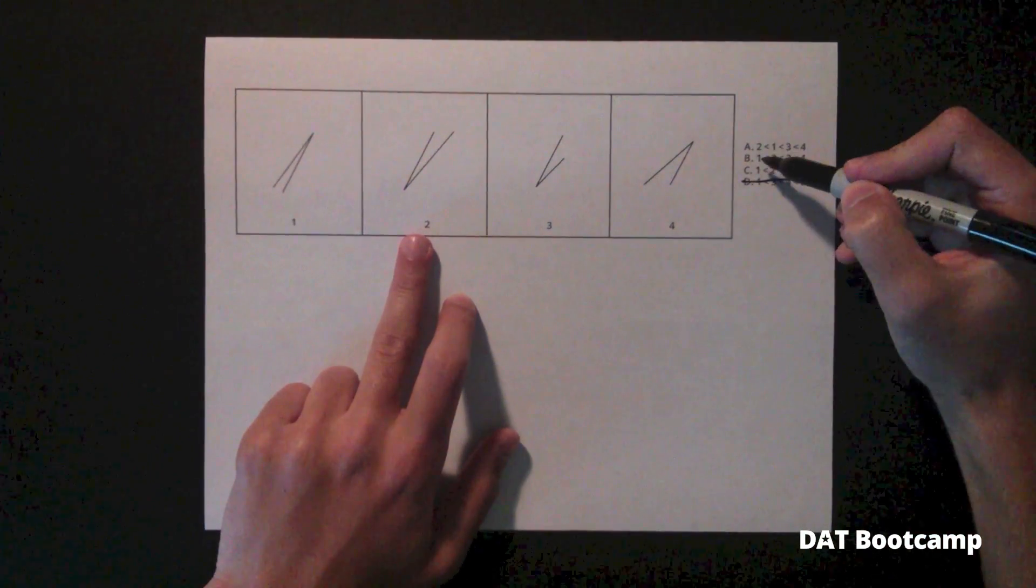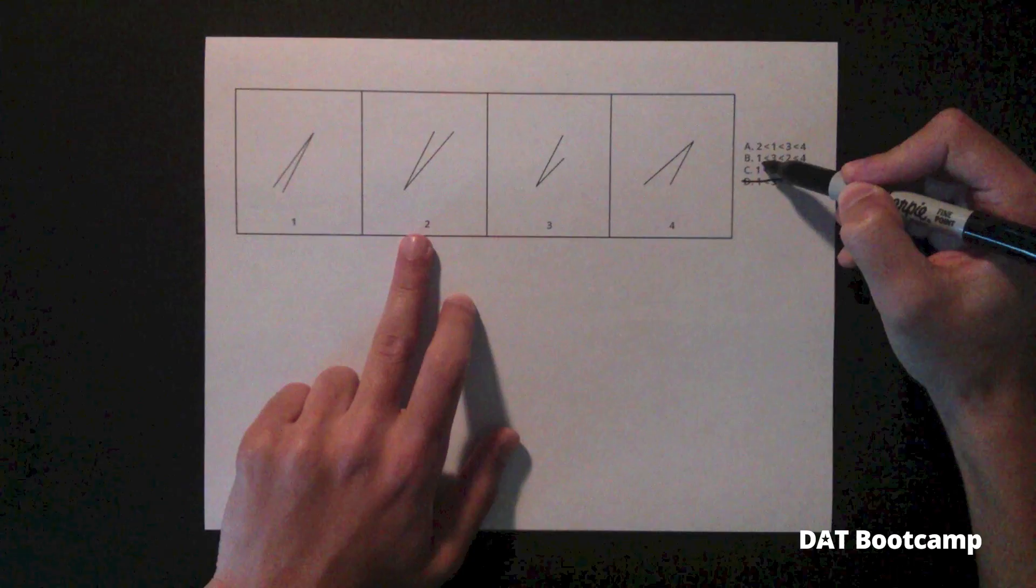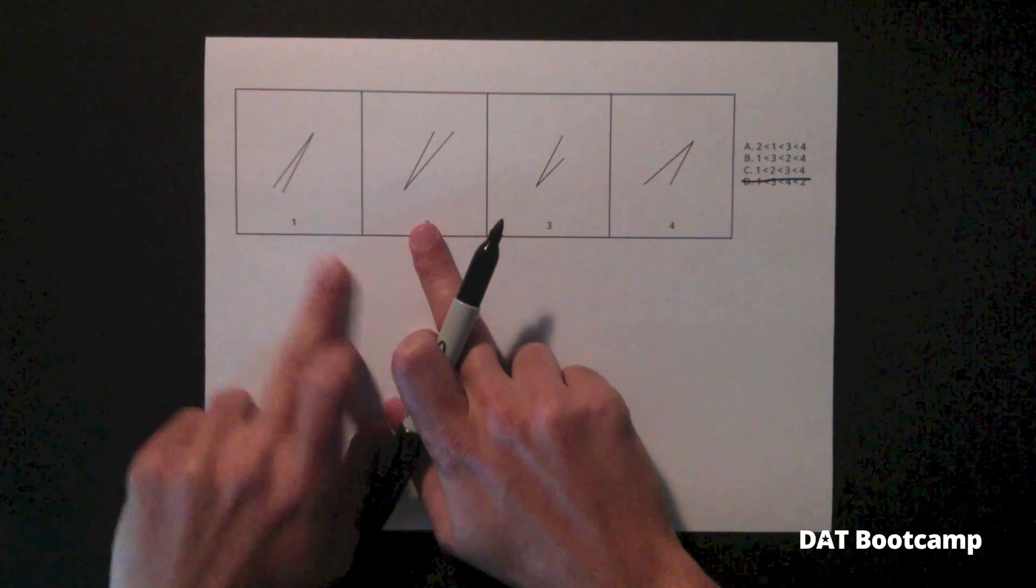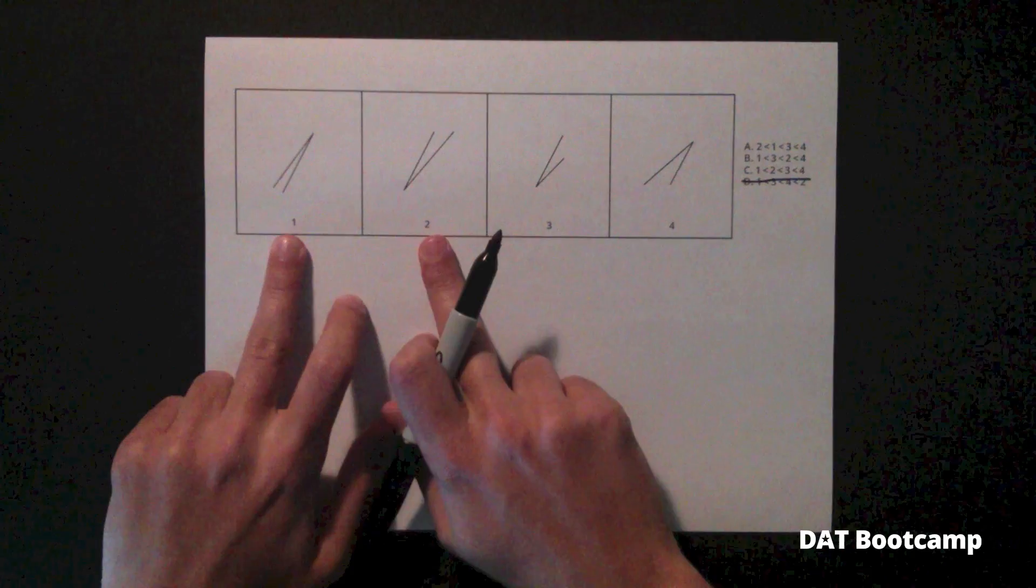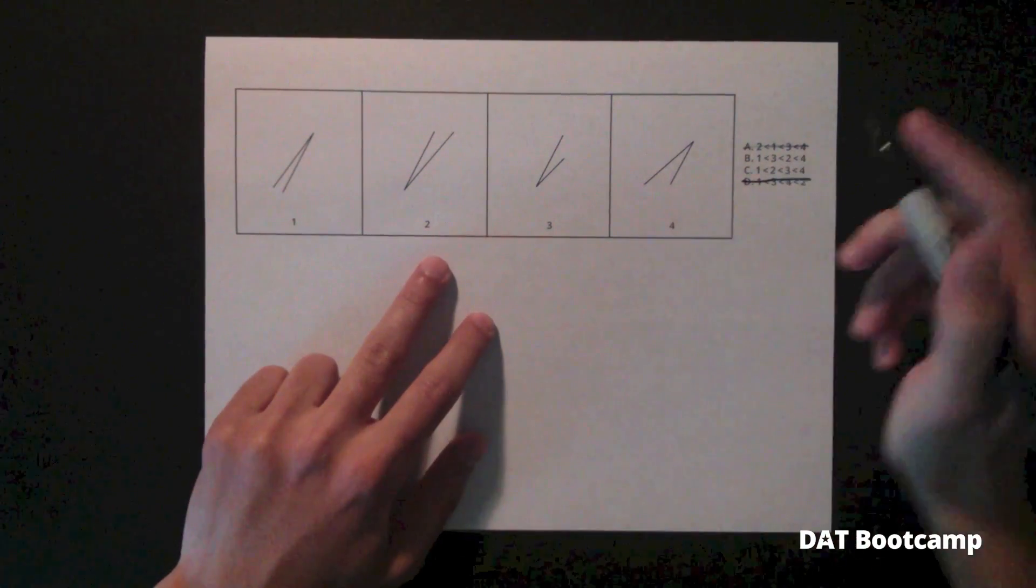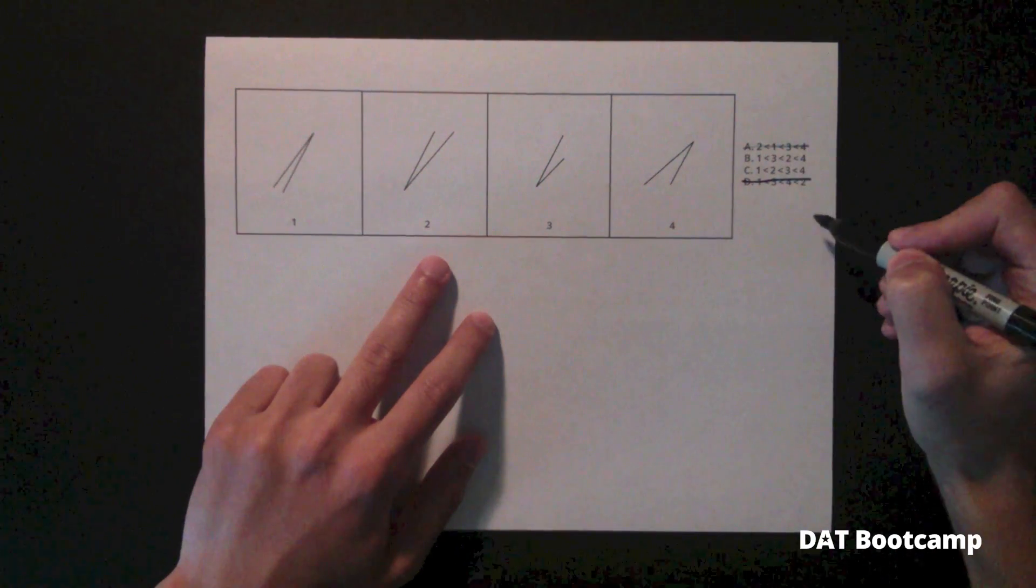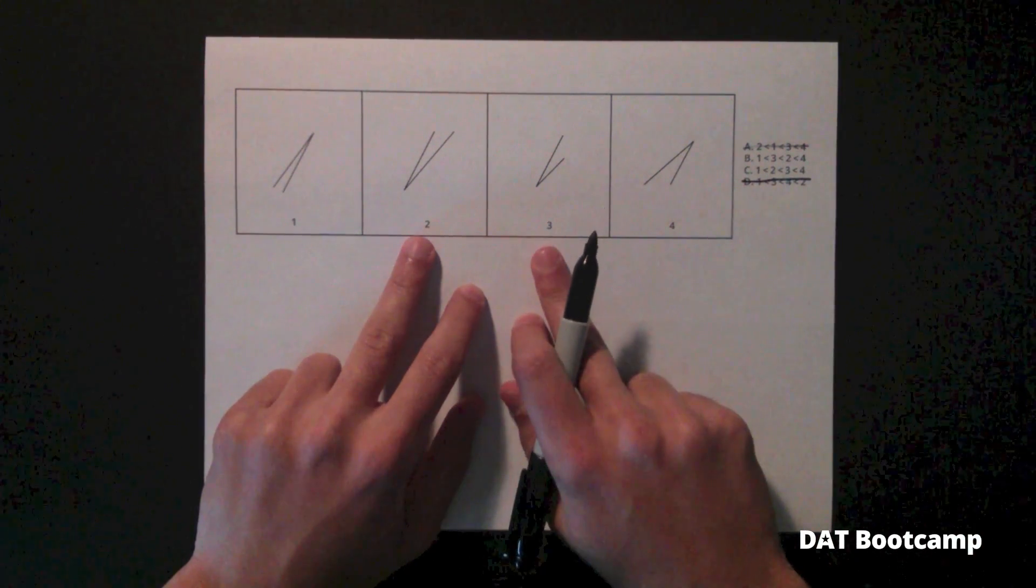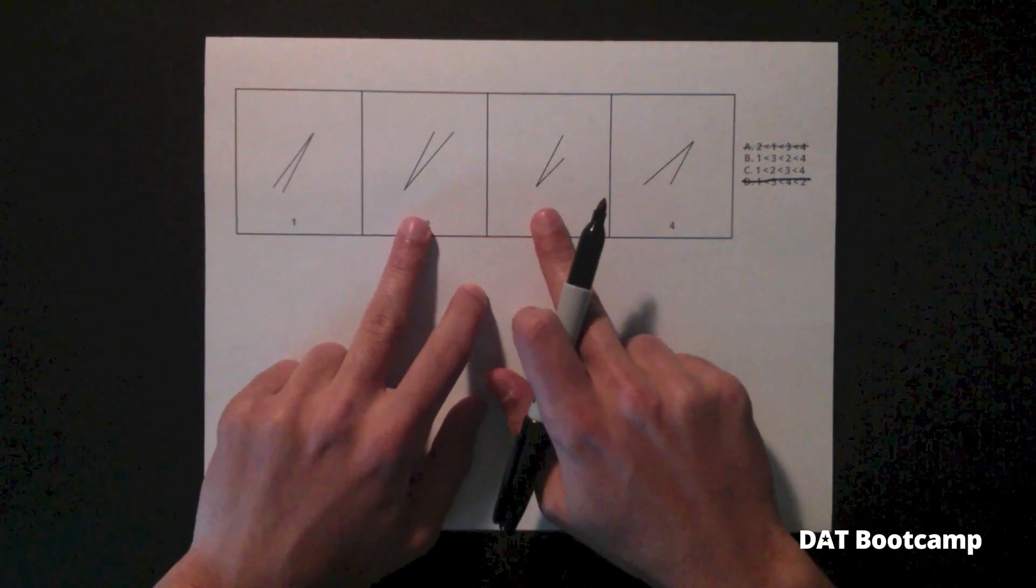Now let's compare the smallest angle. The smallest angle is either 1 or 2. Comparing only these two angles, we can see that 1 is smaller than 2. Therefore, answer A is incorrect. Now we're left with 2 answer choices. Either 2 or 3. We see that these are actually pretty close.